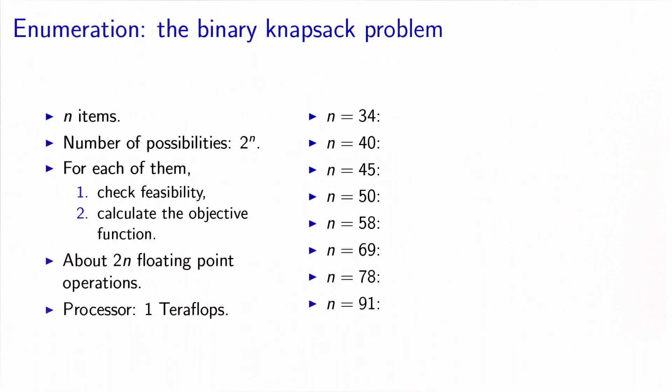Let's use this enumeration technique for the binary knapsack problem. We have n items. For each item, we need to decide if it will be included in the sack or not. Therefore, we have a total of 2 to the n possibilities.